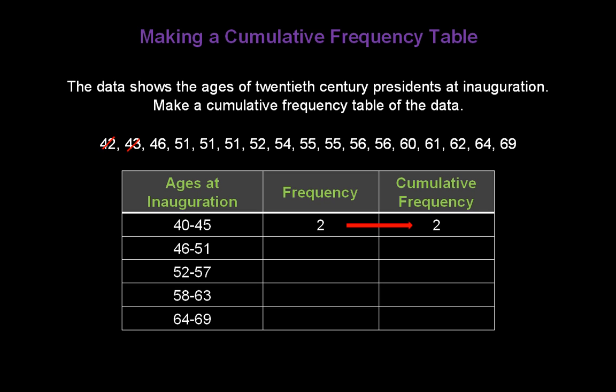How many presidents were 46 to 51 at inauguration? Okay, I've circled them up above. It turns out there are 4 of them. So, we put 4 in the frequency column, mark them off, and add 2 and 4 together to get a cumulative frequency of 6. We've already accounted for 6 of our data items.